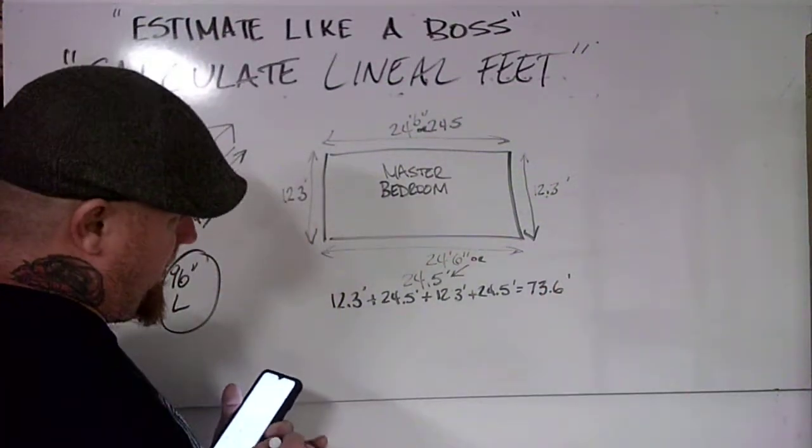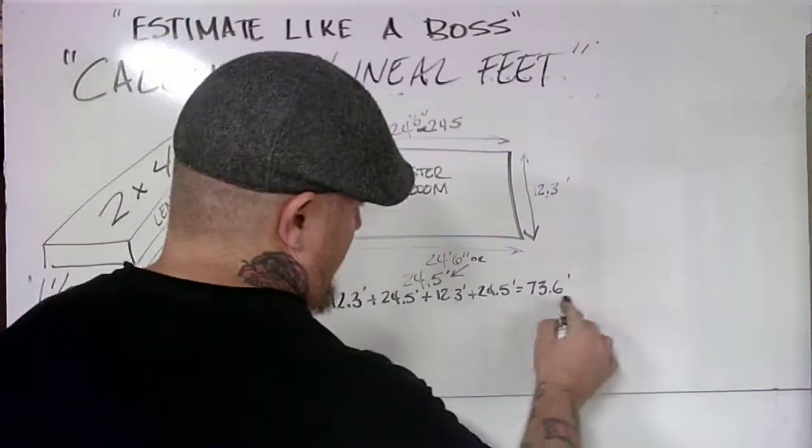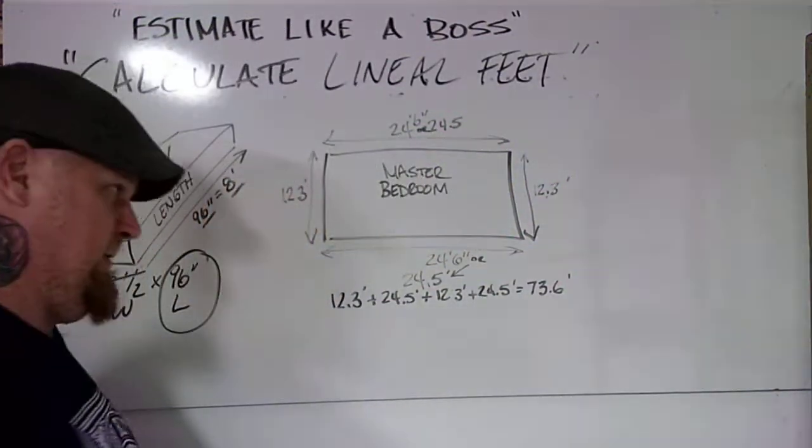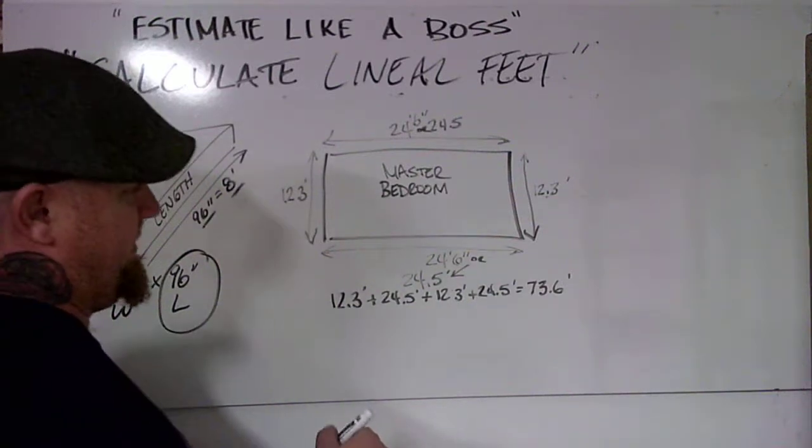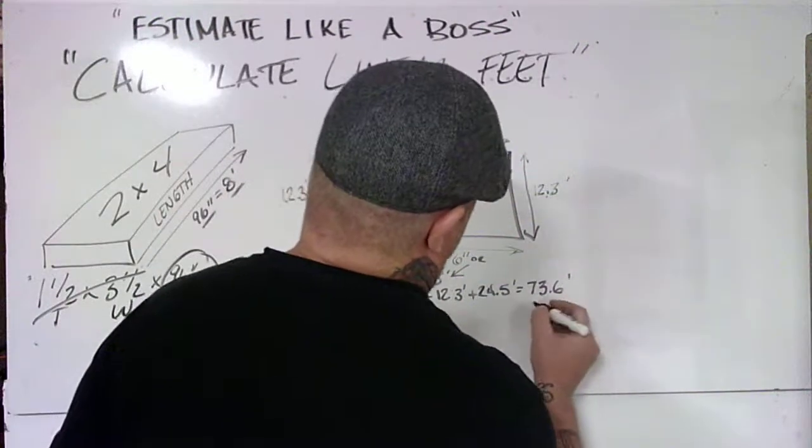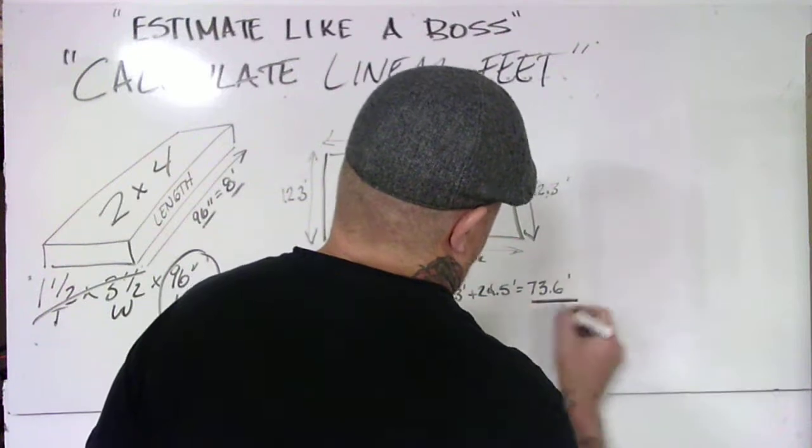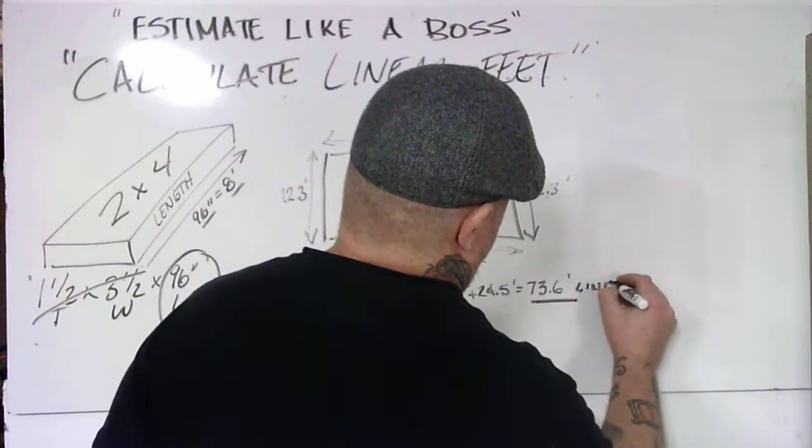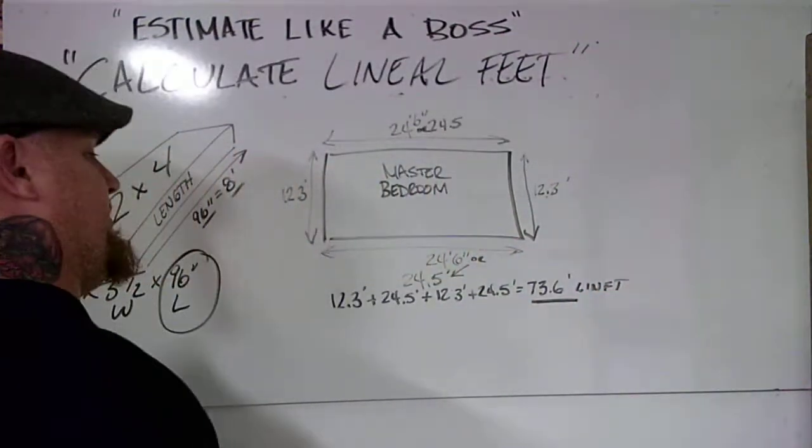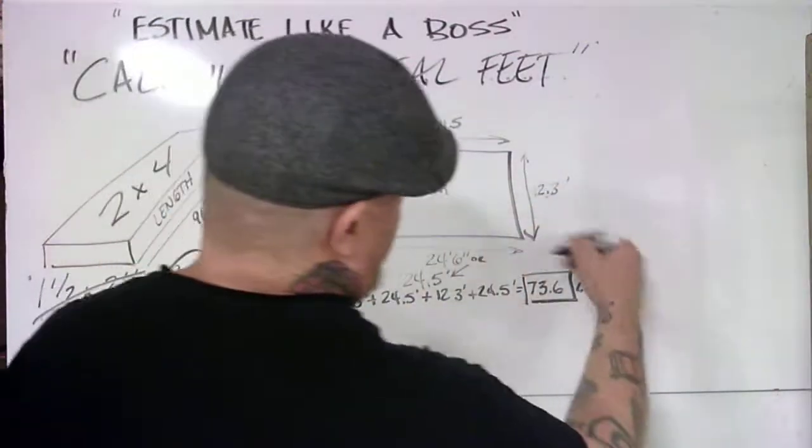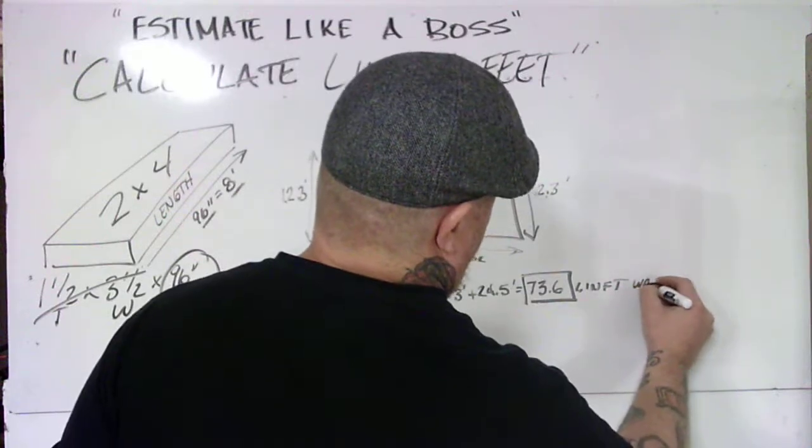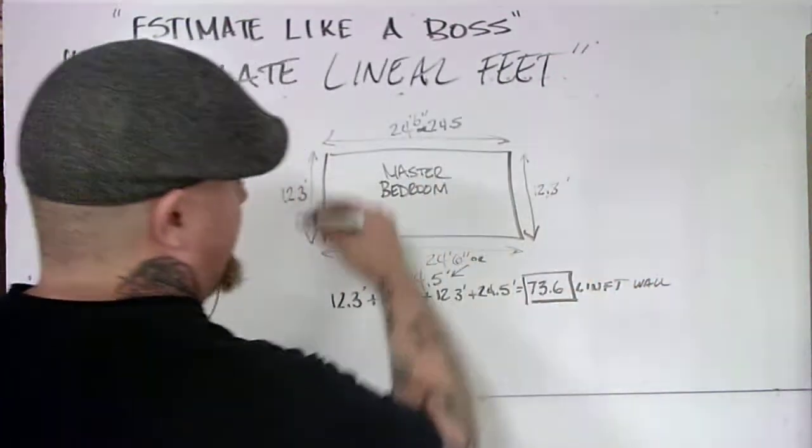We can walk to the store and order 73.6 decimal feet. That's what we would need as far as length—73 feet, 74 feet. A lot of times they don't sell them in full lengths. 73.6 lineal feet. Now that we know the lengths of our room, that's our wall, that's our linear feet of wall. We added all the wall lengths together.